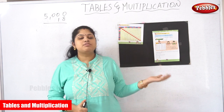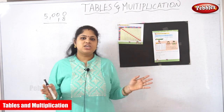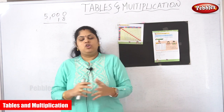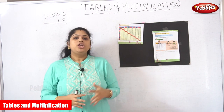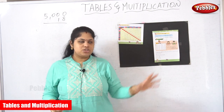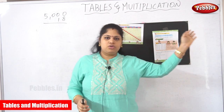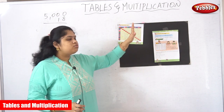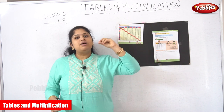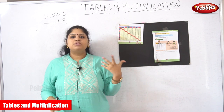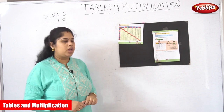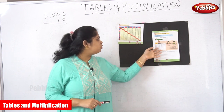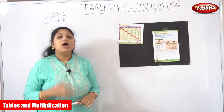Tables are a supporting system for multiplication — we cannot separate them. Multiplication and tables are like twins; they cannot be divided. If you want to know multiplication, you must know the tables. If you are well-versed in tables from 2 to 12, you can perform multiplications within a few seconds or minutes. In our last class, we already covered the 10 times table and how it works.